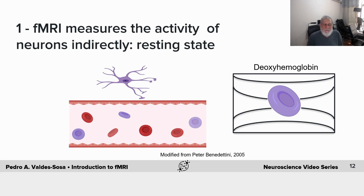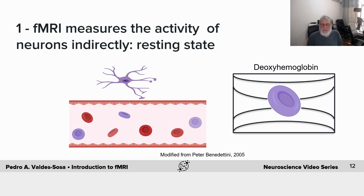When hemoglobin has released oxygen, it's called deoxyhemoglobin, and it produces distortions of the magnetic field. The magnetic field would be straight lines with no distortion; but when we have cells with deoxyhemoglobin, there are distortions which decrease the intensity of the recorded MRI signal.